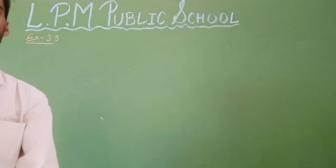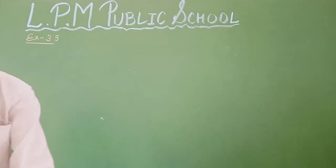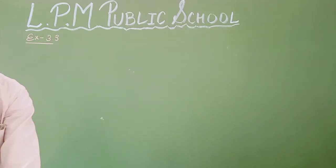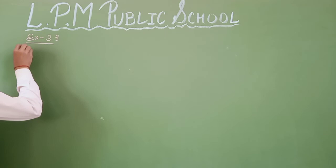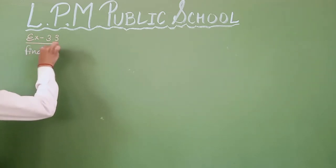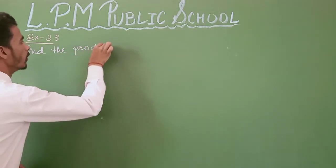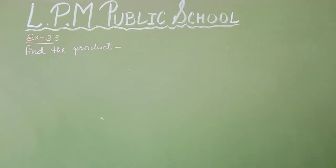We have to explain how you can multiply numbers, as given in Exercise 3.3. The exercise says: find the product. The first question is 59 × 70.